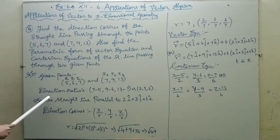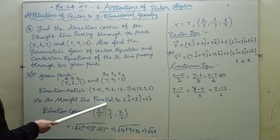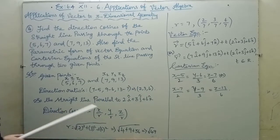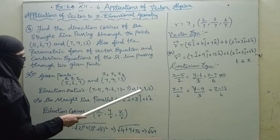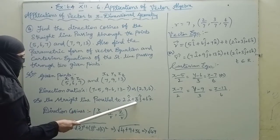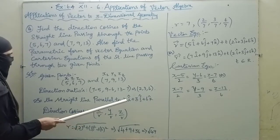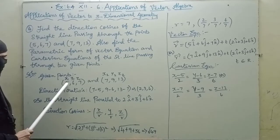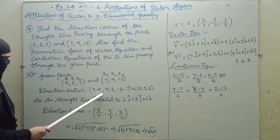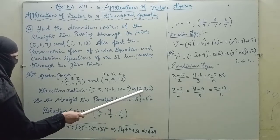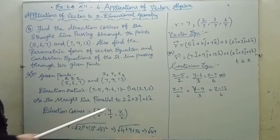First we have the given points, next the direction ratios. The straight line is parallel to the direction vector 2i cap plus 3j cap plus 6k cap. This is the direction ratio vector for the given points.